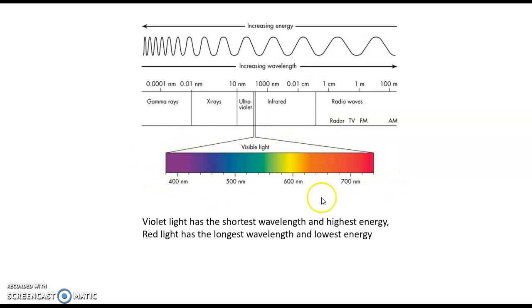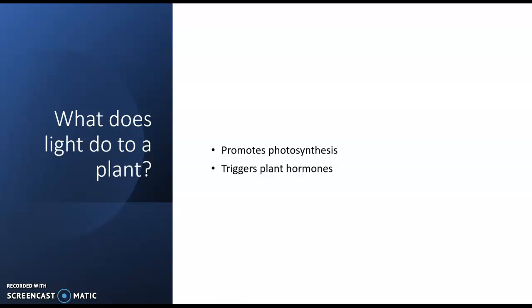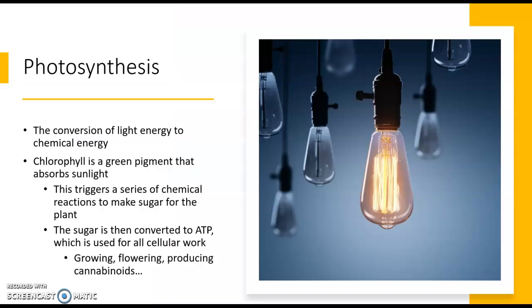For growing plants, we are focused on visible light. Light can do two things to a plant: it can promote photosynthesis, and it can also trigger plant hormones. A lot of people don't realize that plants have hormones — hormones are chemical messengers that travel long distances throughout an organism to send messages, and plants have these just as animals do.